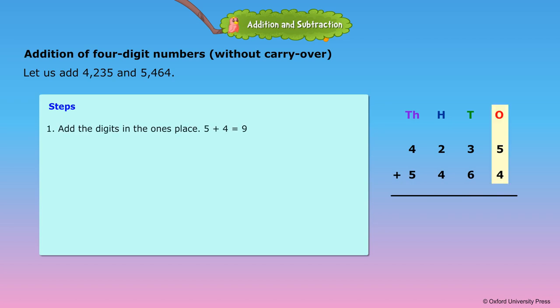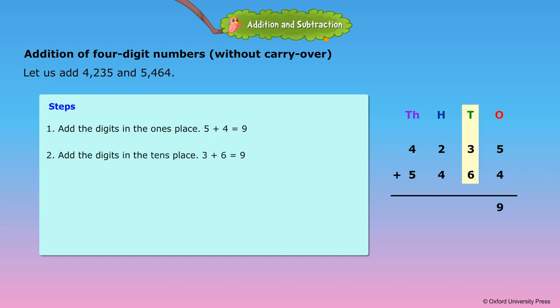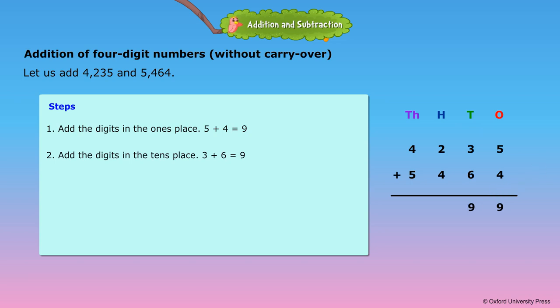Step 1: Add the digits in the 1's place. 5 plus 4 is equal to 9. Step 2: Add the digits in the 10's place. 3 plus 6 is equal to 9.